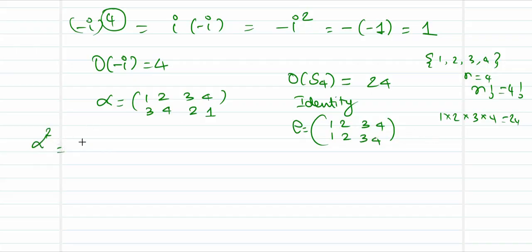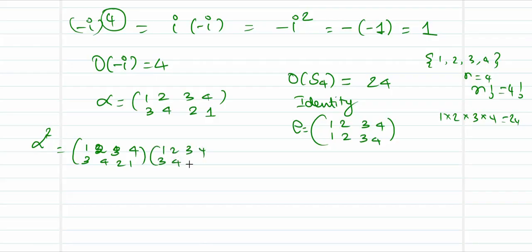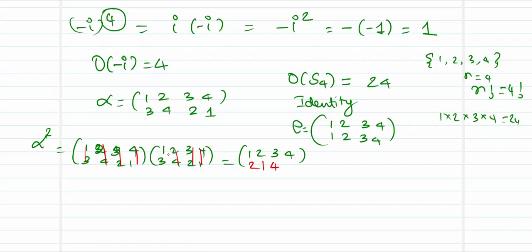Let me compute α². Applying α twice: 1→3→2, 2→4→1, 3→2→4, 4→1→3. So α² maps (1,2,3,4) to (2,1,4,3). This is not the identity element, so let me try α³.